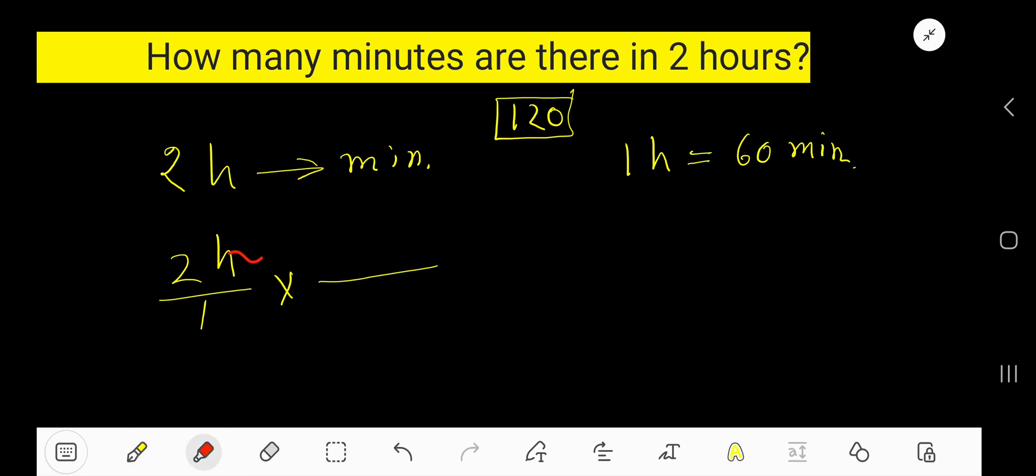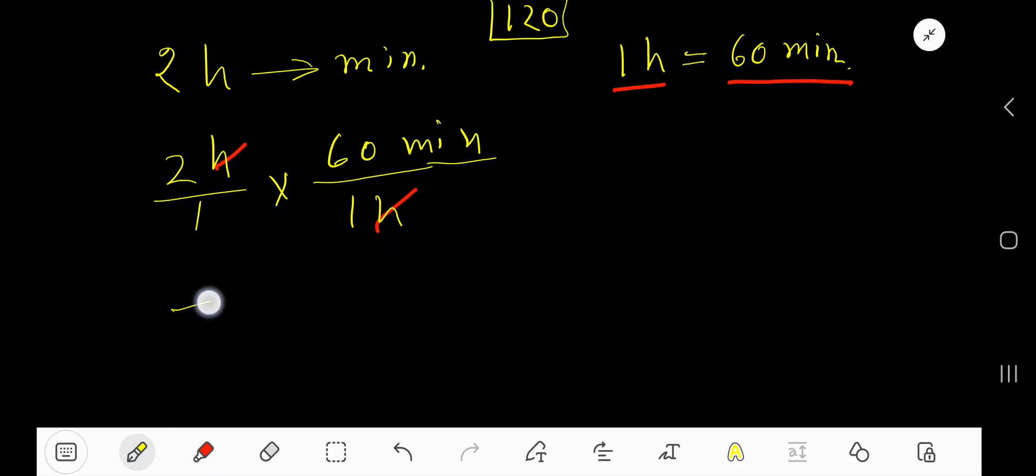To cancel this hour, hour will be in the denominator of this conversion equation so that you can cancel out 2 hours. And here, write 60 minutes. Now multiply top numbers together: 2 times 60 and 1 times 1.